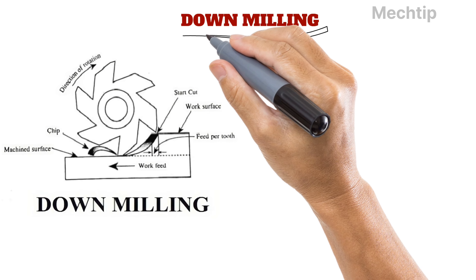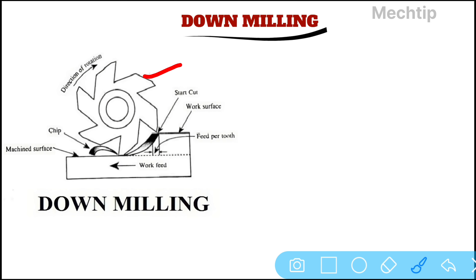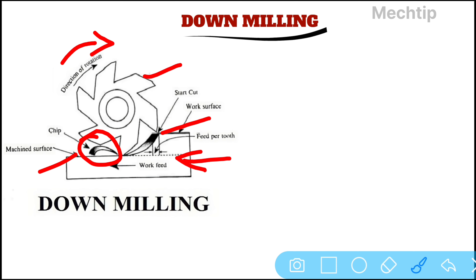Let us begin with the down milling setup. Here the cutter rotates in a clockwise direction, and the feed of the workpiece and the rotation of the cutter are in the same direction. It includes one already-machined surface and another surface which is going to be machined, as shown in the figure. In down milling, the chip thickness is maximum at the beginning and minimum — that is, zero — at the end of the cutting process.